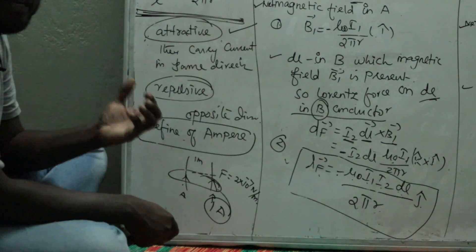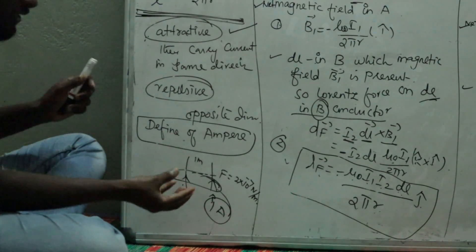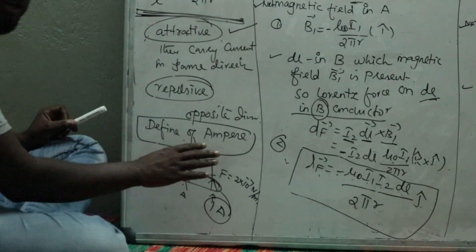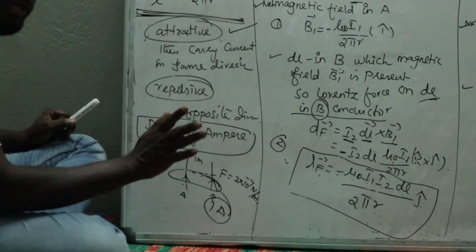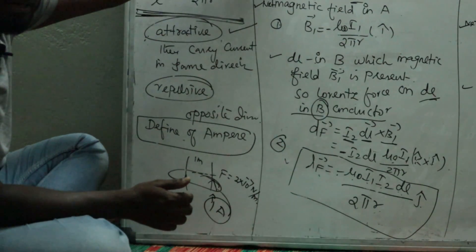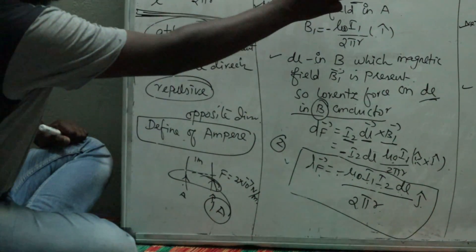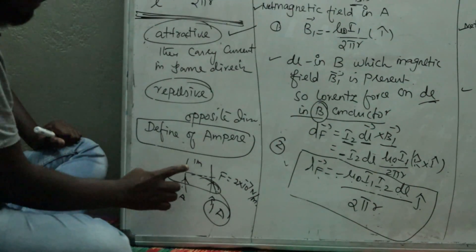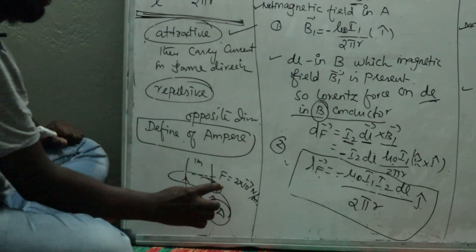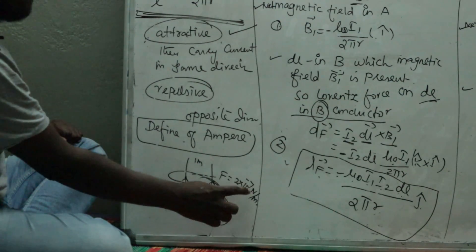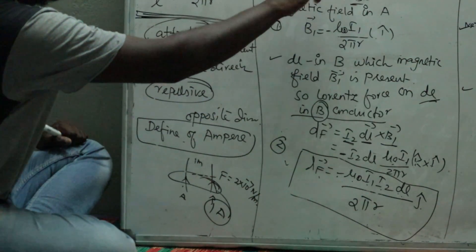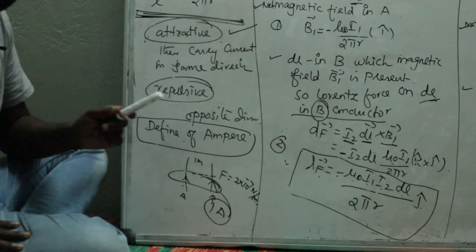So the current flowing in conductors A and B is 1 Ampere. The distance between them is 1 meter, that is R = 1 meter, and the force experienced is 2 × 10⁻⁷ N/m. When you change the current flowing in the two conductors to achieve this force, the current value is defined as 1 Ampere.